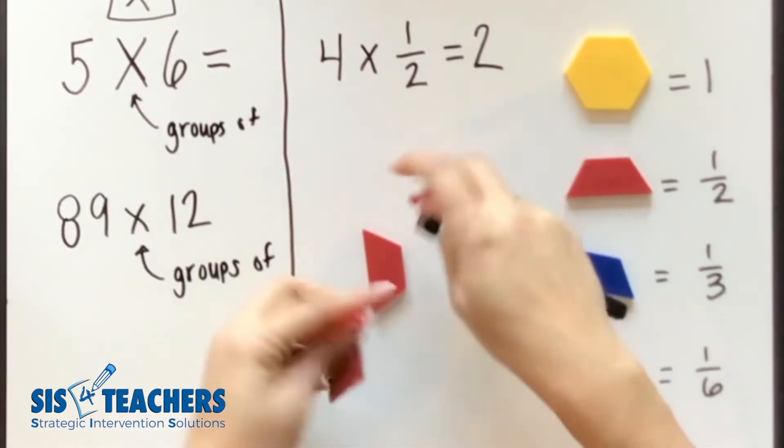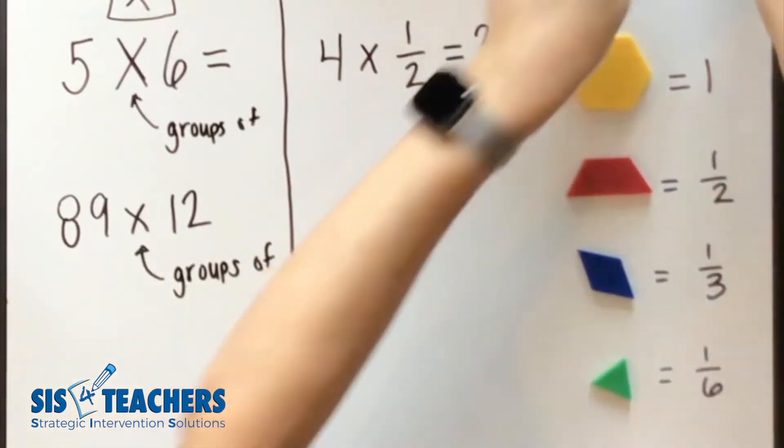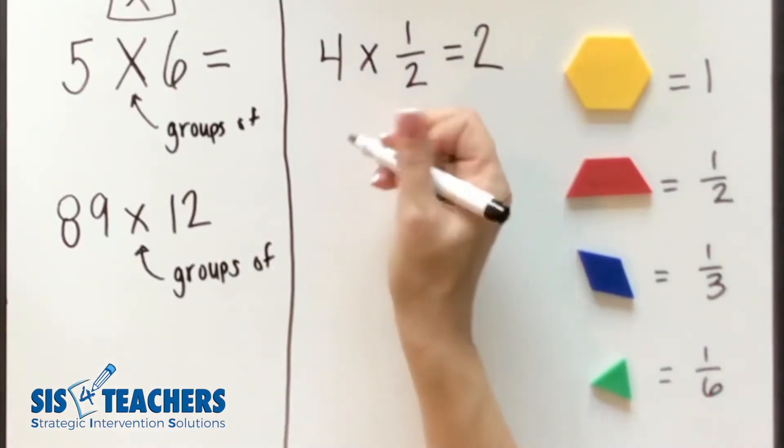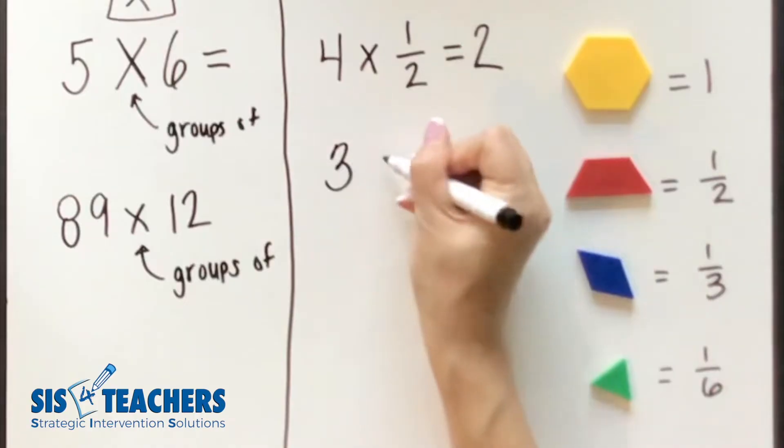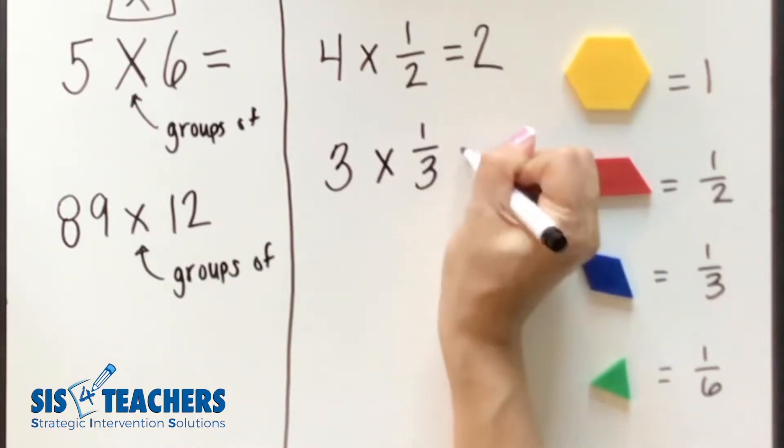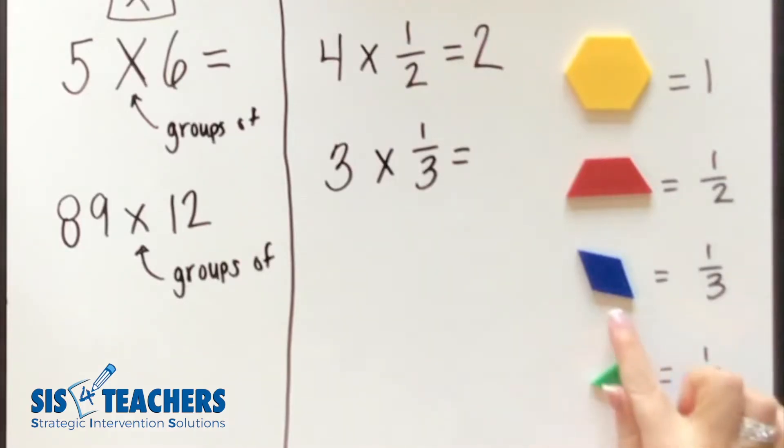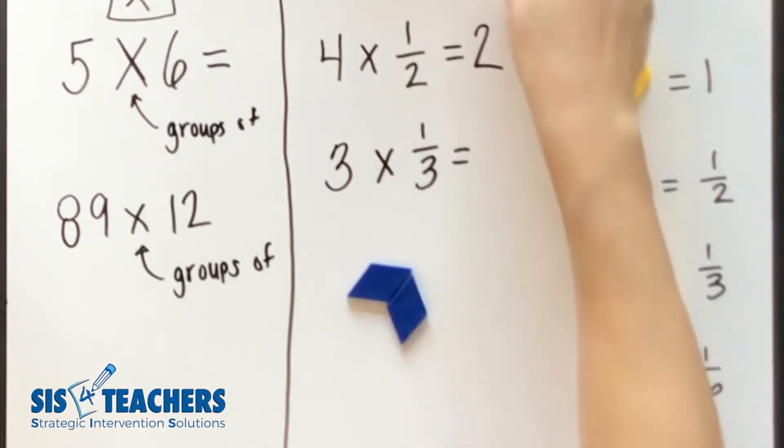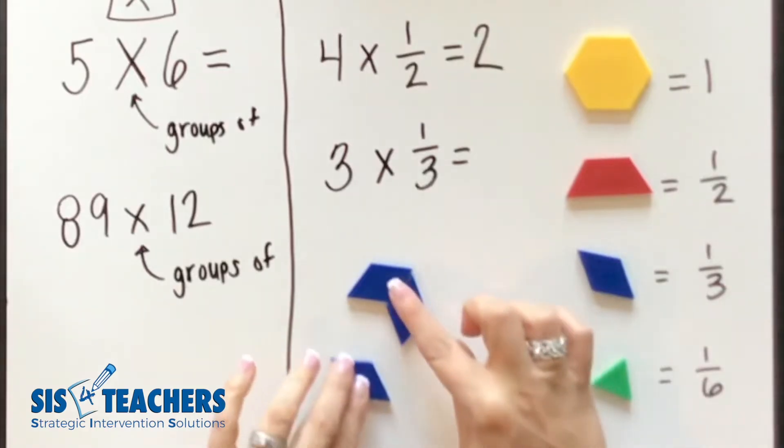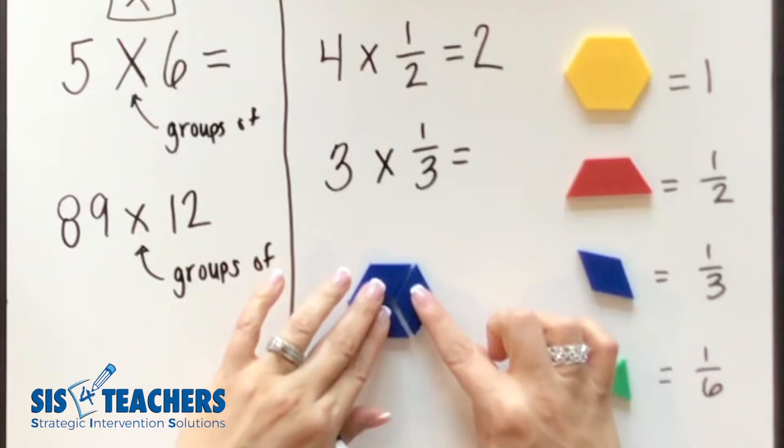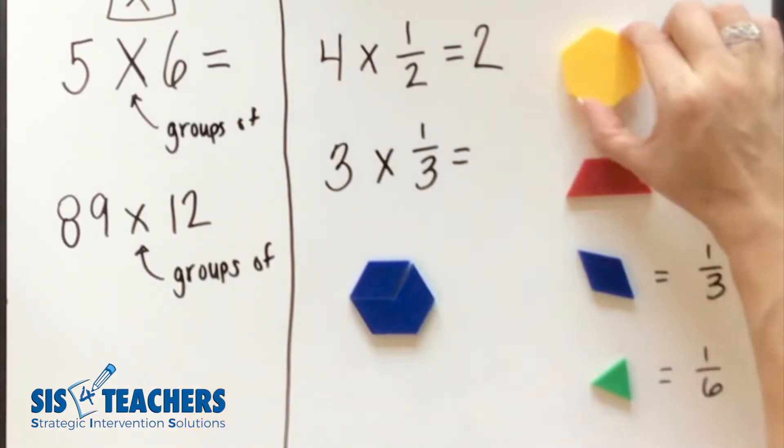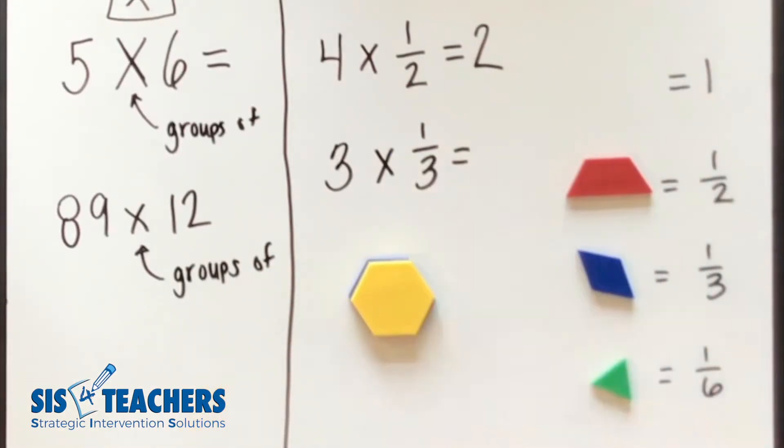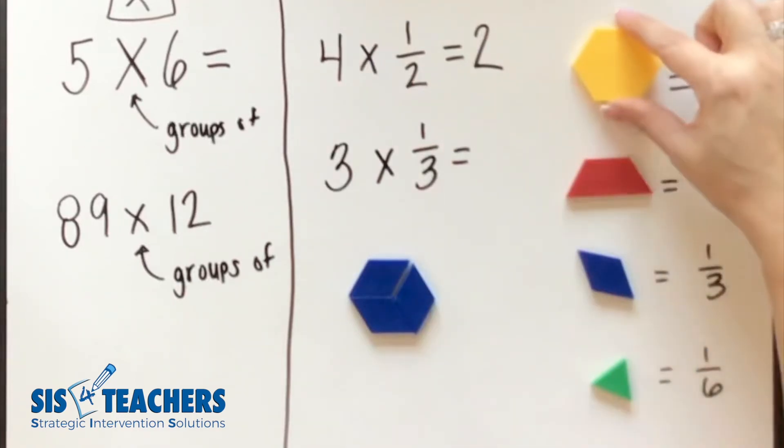Let's try it with another pattern block to see if we can do the same thing. Let's try to do three groups of 1/3. So we're going to use the thirds, which is going to be our rhombus. And so I'm going to pull out one rhombus, two, three. I have three groups of these individual one thirds. When I look at how much that totals, I can put this on top and it tells me that it's equal to one whole.